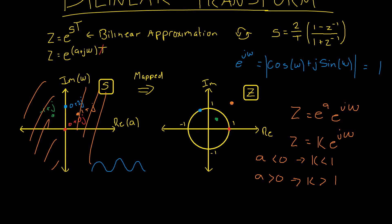Now we get to the fun stuff — deriving our s term from our bilinear approximation. This is going to get a little bit hairy, and we're going to use a Taylor series approximation and a couple of other bits of math. I'll leave links below if you'd like to read more into that to see how it actually works.